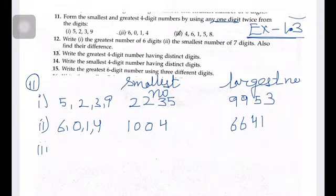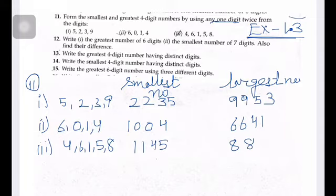Now the third part of it. The third part is 4, 6, 1, 5, and 8. These are the digits. For the smallest, we repeat the smallest digit, which is 1. So we repeat 1, then 4 and 5. Then the next one: 8, 8, 6, and 5. That is the answer of the 11th question.